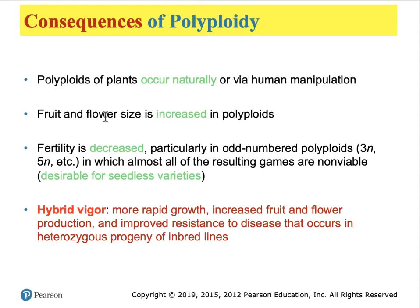Polyploidy can occur by natural or artificial means; the size of flowers and fruit is generally increased in polyploids. The food industry exploits the fact that hybrids with an odd number of chromosomes normally cannot produce seeds—this is how seedless watermelons, seedless grapes, and seedless oranges are produced. This also introduces the concept of hybrid vigor, which makes offspring more resilient than the parents—to be revisited in a population genetics chapter.